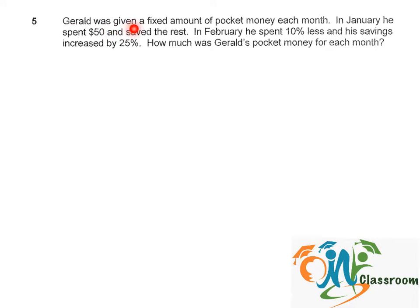Jared was given a fixed amount of pocket money each month. In January, he spent $50 and saved the rest. In February, he spent 10% less and his savings increased by 25%. How much was Jared's pocket money for each month?